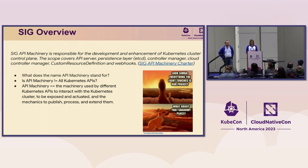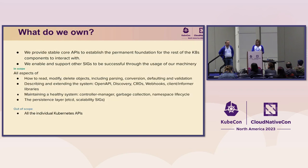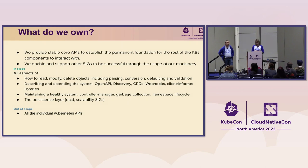API machinery doesn't mean all the APIs in Kubernetes — that is a misconception. We own some of the APIs, but not all individual APIs are owned by API machinery. The charter has the detailed list. The mechanisms to read, modify, delete objects, parsing, conversions, defaulting, validation, and the OpenAPI discovery, CRDs, webhooks, client and formatter libraries are all in scope.